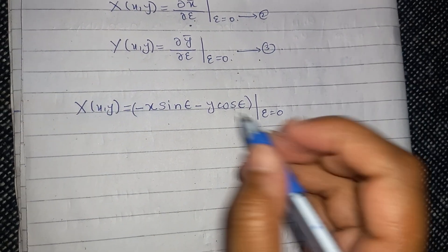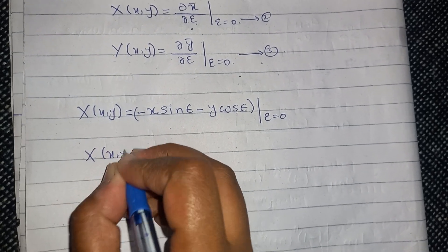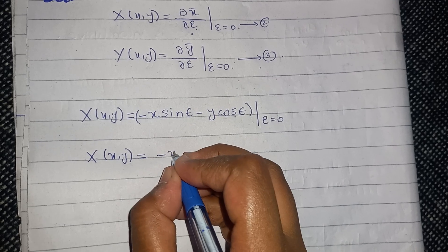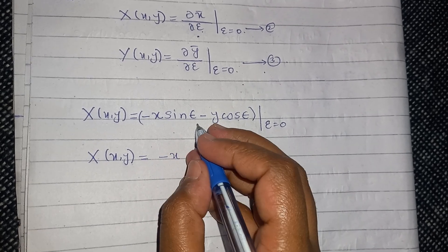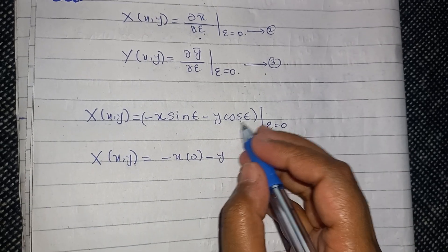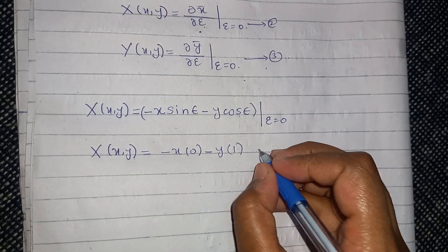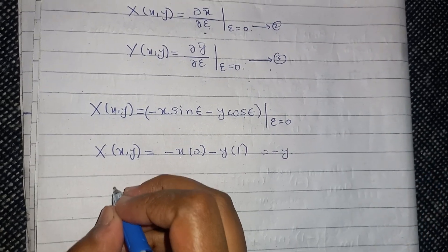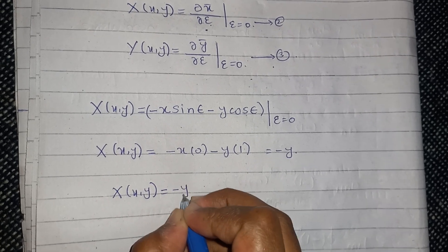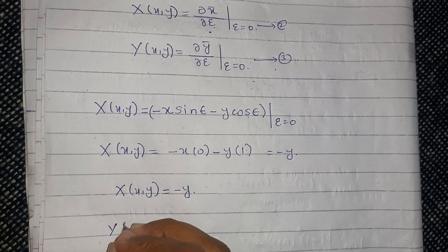Substituting epsilon equal to zero into this expression, we get capital X(x, y) equals minus x times sine(0), which is zero, minus y times cos(0), which is one. So the value of capital X(x, y) equals minus y.